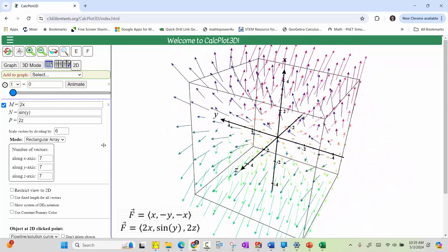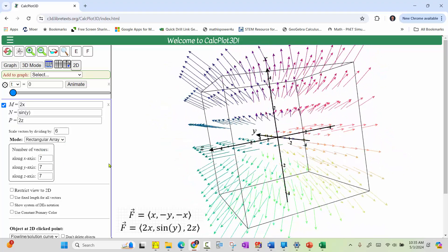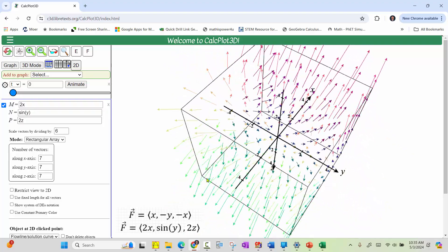And of course, we can make adjustments to the scaling as well as the number of vectors along the axes if we want a different view. I hope you found this helpful.